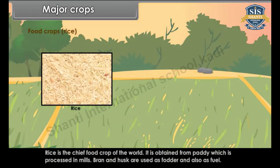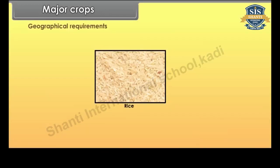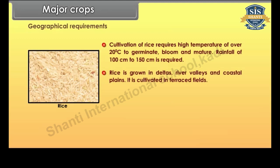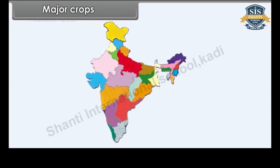Rice is the chief food crop of the world. It is obtained from paddy which is processed in mills. Bran and husk are used as fodder and also as fuel. Cultivation of rice requires high temperature of over 20 degrees Celsius to germinate, bloom and mature. Rainfall of 100 cm to 150 cm is required. Rice is grown in deltas, river valleys and coastal plains, and is cultivated in terraced fields. Rice grows well on loamy and silty alluvial and fertile soil.